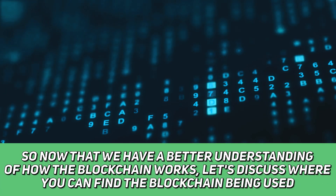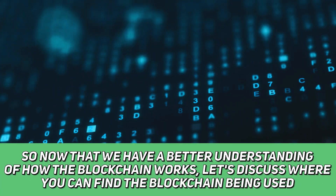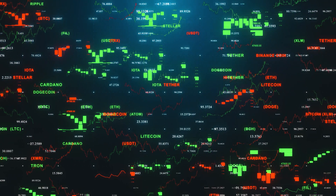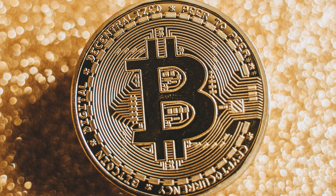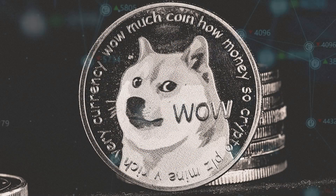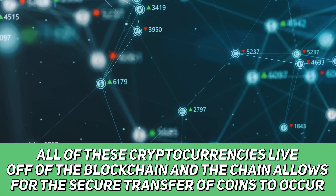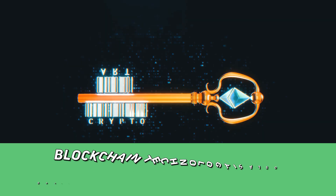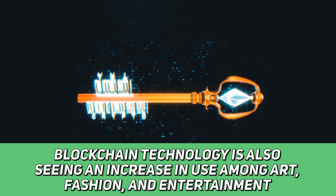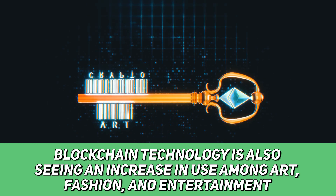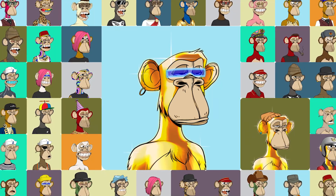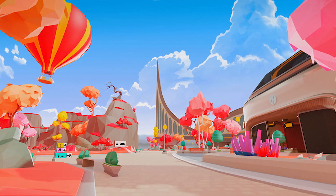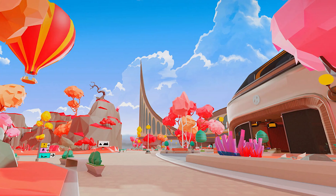Now that we have a better understanding of how a blockchain works, let's discuss where you can find a blockchain being used. The main use currently is for cryptocurrencies such as Bitcoin, Ethereum, and Dogecoin. Blockchain technology is also seeing an increase in use among art, fashion, and entertainment — some good examples can be seen in NFTs and within the metaverses dozens of companies are now trying to implement with their brands.